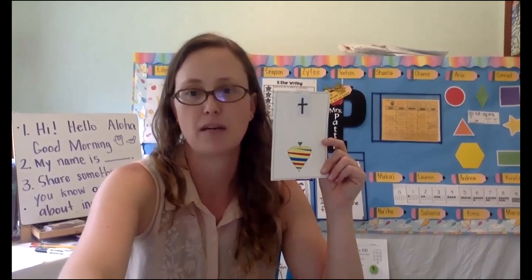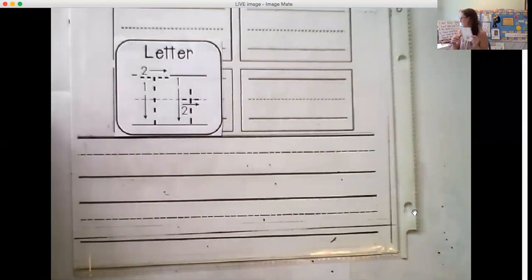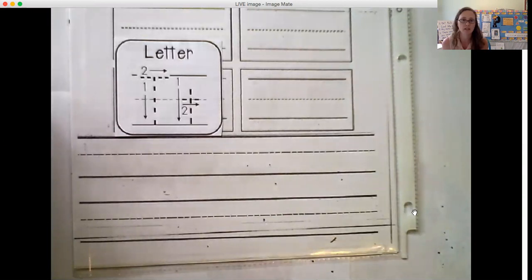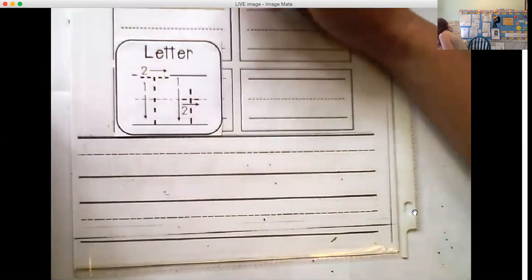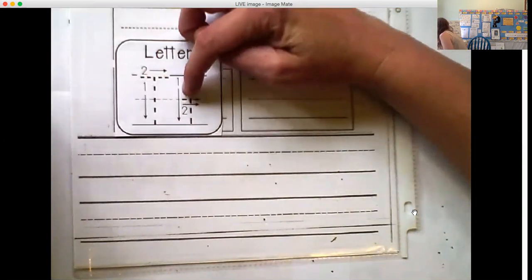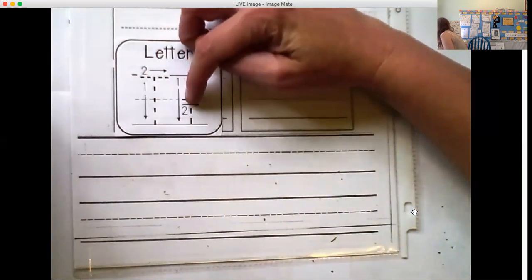All right, let's go ahead and share our screen and we'll talk about our lowercase t today and how we make it. So I see our lowercase t and our capital T look very similar, but there are some things that are different. What is different between your capital and your lowercase t? It's the pull across. So I see on the capital T, our pull across is on the top line and on our lowercase t, it's here on the dotted line.